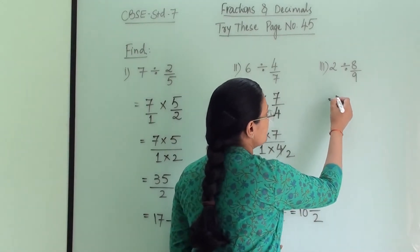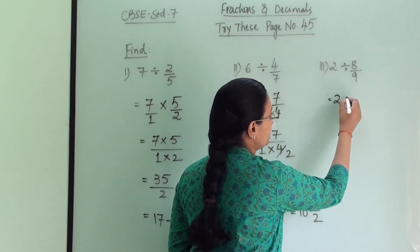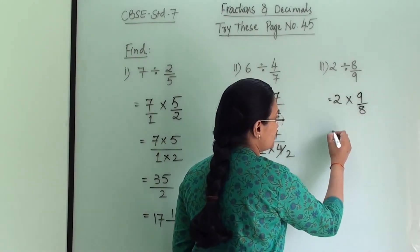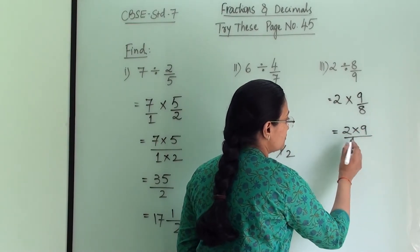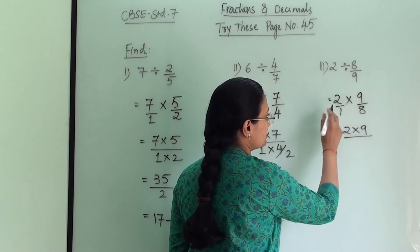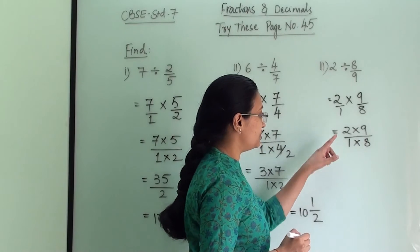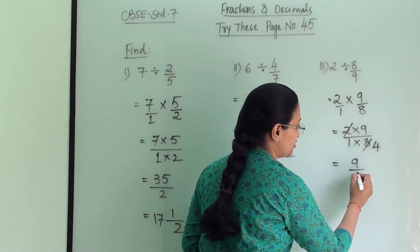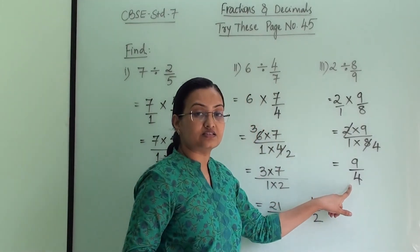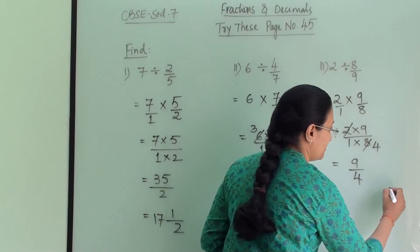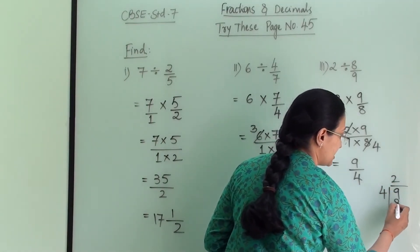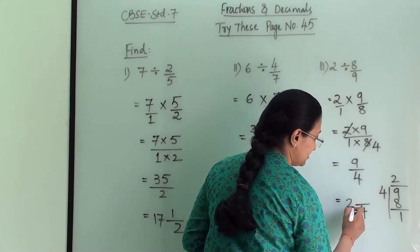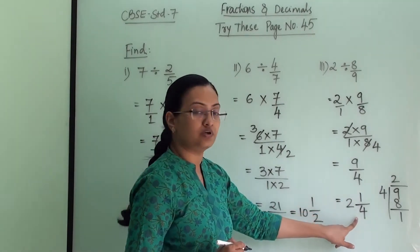Third numerical: 2 divided by 8/9. We write the multiplication sign and take the reciprocal of 8/9, which is 9/8. So it becomes 9 × 2 divided by 1 × 8. We can reduce: 2 and 8 share a factor of 2, giving 9/4. Converting to mixed fraction: 9 ÷ 4 gives quotient 2 and remainder 1, so the answer is 2 and 1/4.